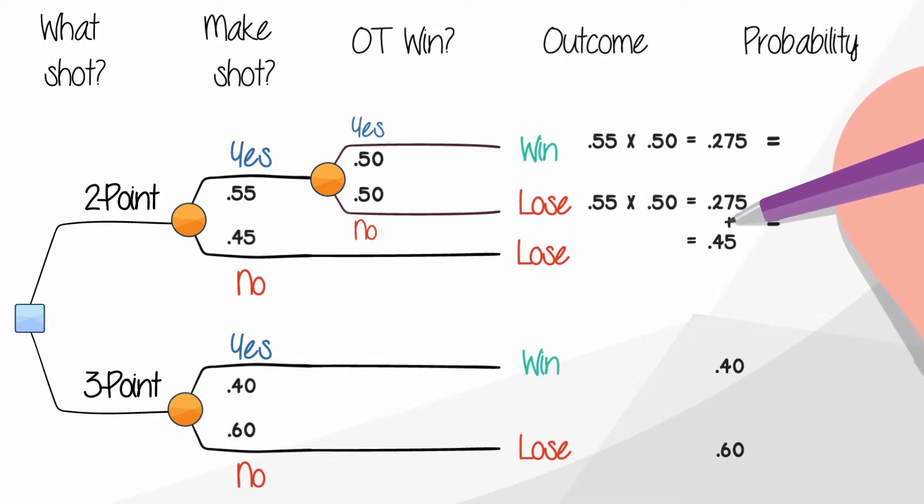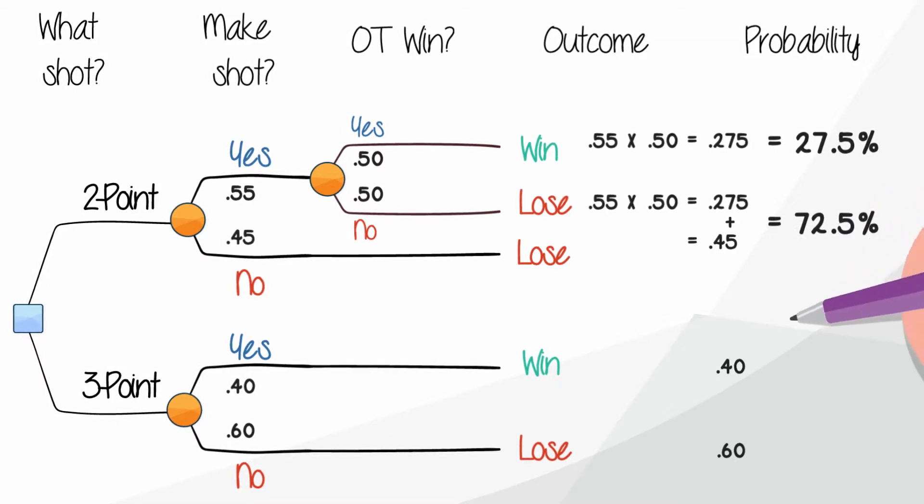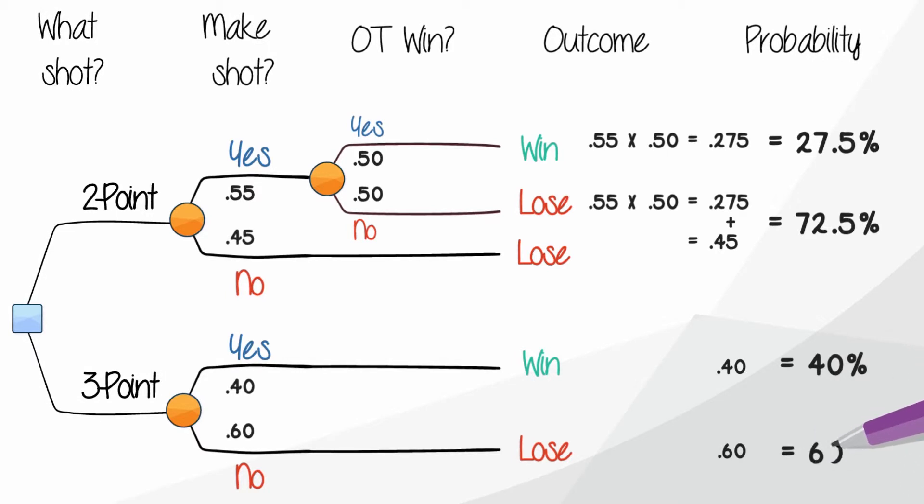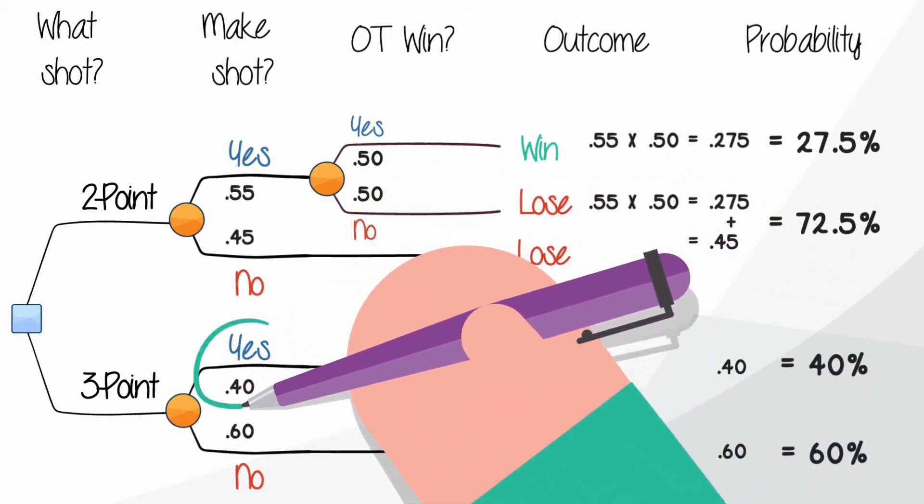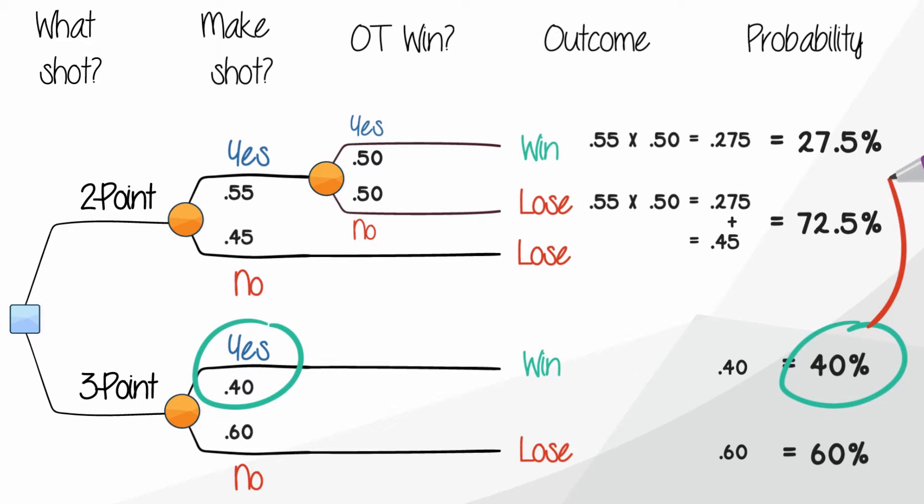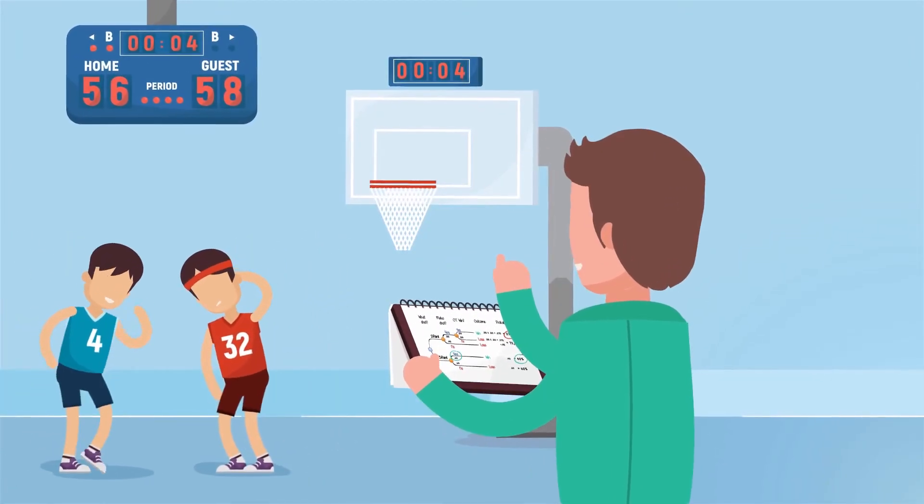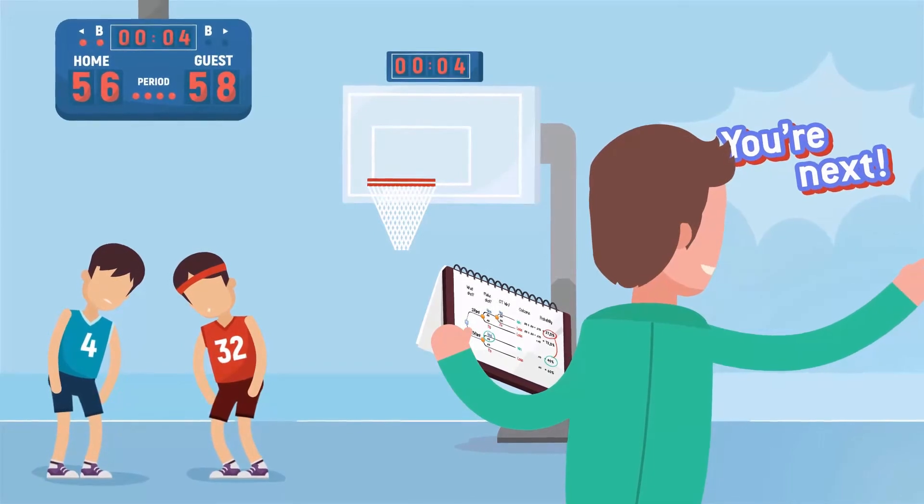The two-point shot is 27.5% likely to win, and 72.5% likely to lose. For the three-point shot, the win-lose probabilities are 40% and 60%. So even though you're more likely to lose either way, you're better off taking the three-point shot, as this gives you a much better chance of winning. If you do the math, 40% is 45% better than 27.5%. That's a significant difference. That's why consistently making the better decision is what separates the good from the great.